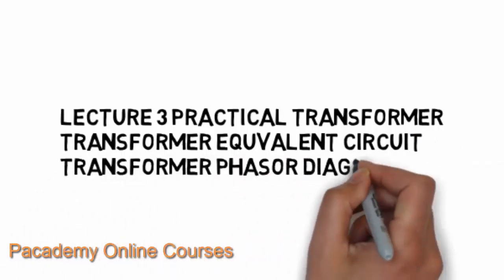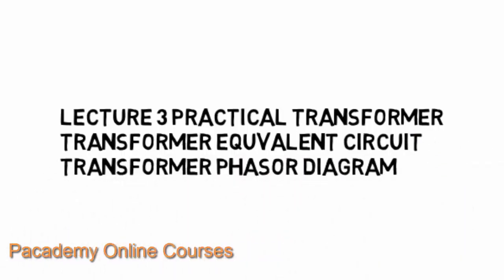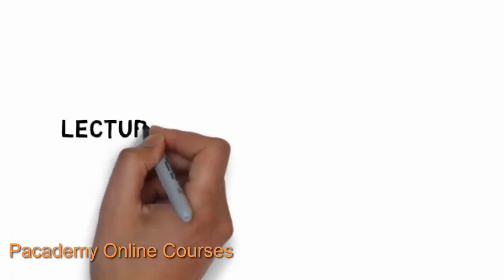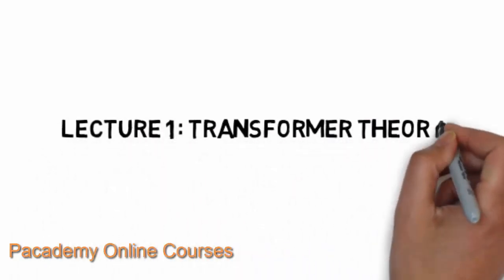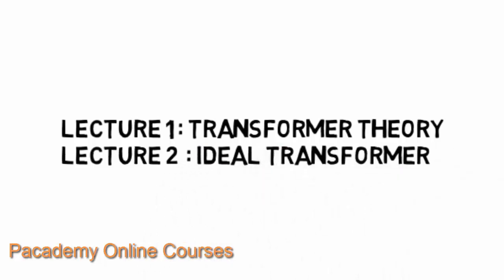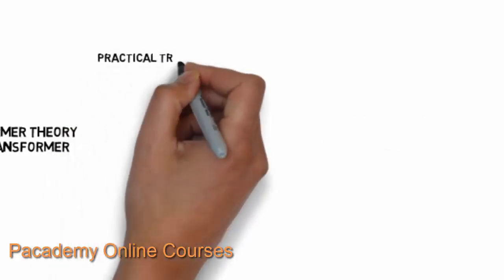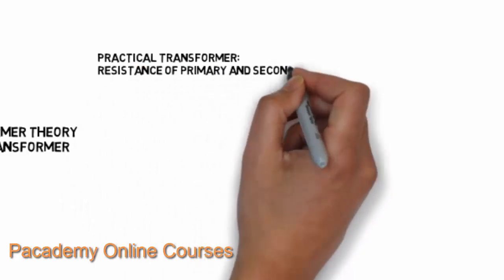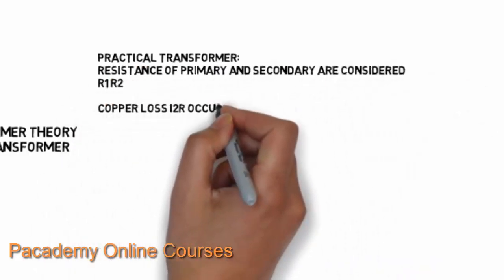This is lecture three in the series on transformers, covering practical transformers. We will draw the transformer equivalent circuit and the phasor diagram. In lecture one, we saw transformer theory — how a transformer works with primary and secondary windings and transfer of EMF through magnetic linkage. Lecture two covered the ideal transformer, which had no losses, no reactance, and no magnetic leakage, where all power induced in the primary was transferred to the secondary.